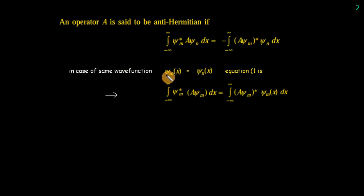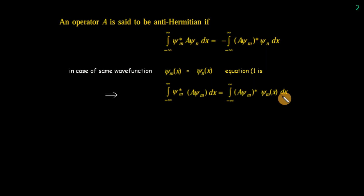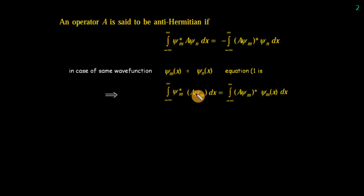In the case where both wavefunctions are the same (m = n), the Hermitian operator expression becomes: ∫ psi_m* A psi_m dx = ∫ (A psi_m)* psi_m dx. If a minus sign appears here, then the operator is anti-Hermitian. Quantum operators correspond to classical dynamical variables such as position, momentum, kinetic energy, and angular momentum.